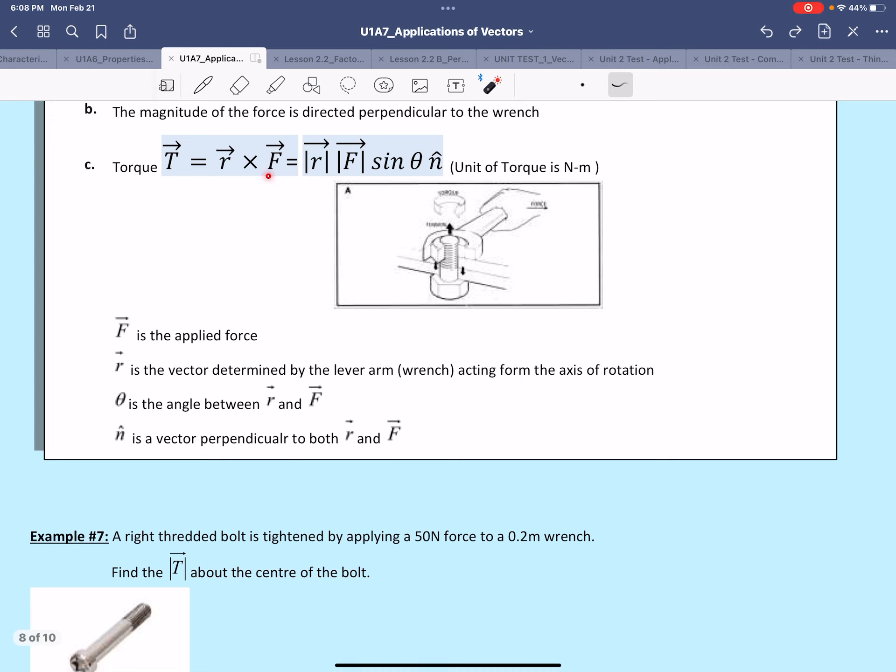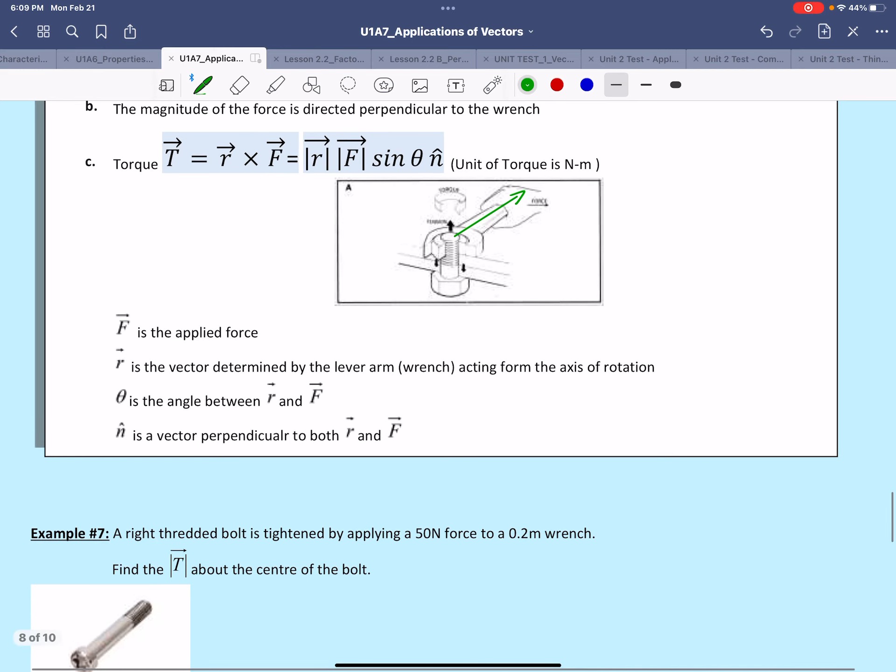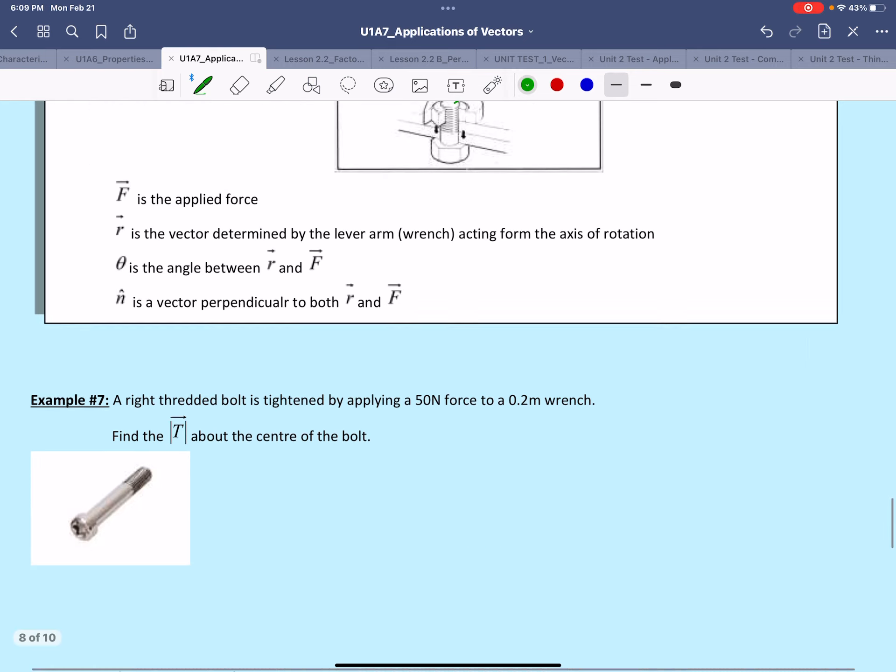Now F is the applied force. Remember R is the vector determined by the lever arm acting from the axis of rotation. So what that means is that when we measure the value of R, we measure it away from the axis of rotation. And theta is the angle between the force and R. And last, N is a unit vector perpendicular to both R and F.